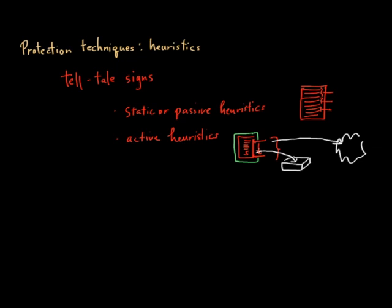In terms of passive heuristics, let me give you some examples. One example might be whether there are sections of the file that are readable, writable, and executable, assuming everything is readable.